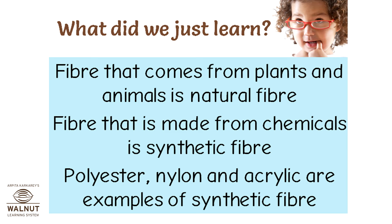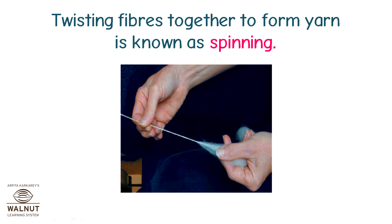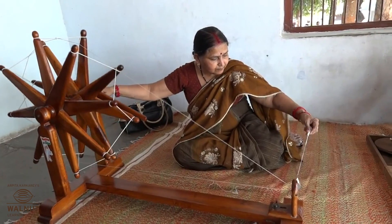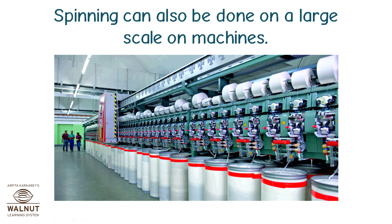Polyester, nylon, and acrylic are examples of synthetic fibre. Yarn is made of fibres twisted together. Twisting fibres together to form yarn is known as spinning. Spinning can be done by hand on a hand spindle or takli, or on a large scale on machines.